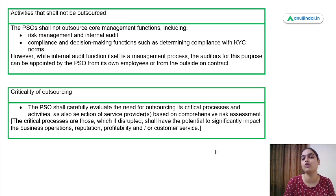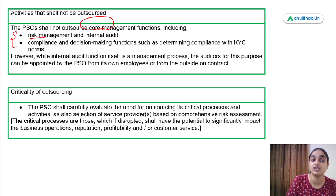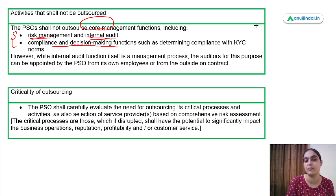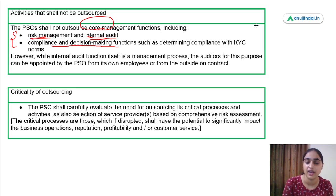PSOs can outsource all activities, but core management functions cannot be outsourced. What is included under core management functions? The function of risk management, conducting internal audits, and compliance and decision-making functions — such as checking whether KYC is complied with. These three things cannot be outsourced.